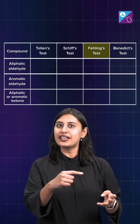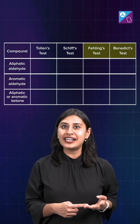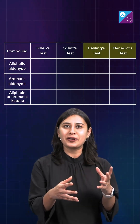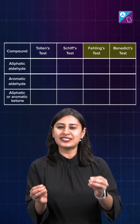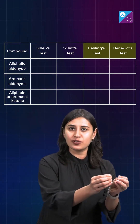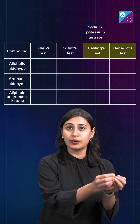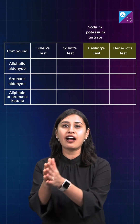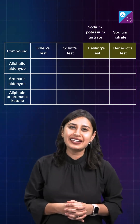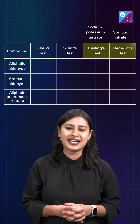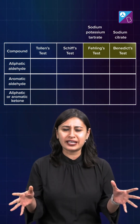Fehling's test and Benedict's test are like brothers. All that is changing is instead of Fehling B, which is sodium potassium tartrate, you have sodium citrate in Benedict's test. Rest, everything is same.